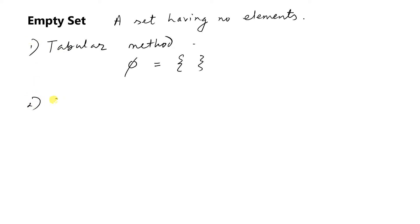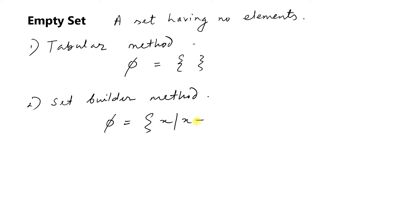In the set builder method, the empty set can be represented as: the set of all x such that x is not equal to x. That is one representation in tabular method and another in set builder method.